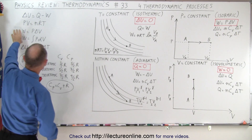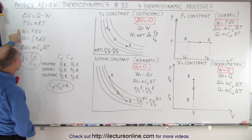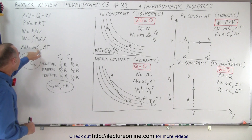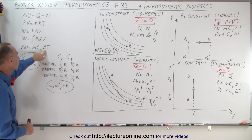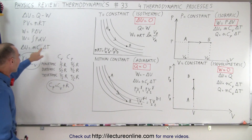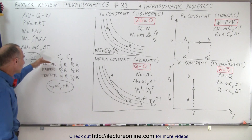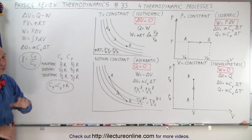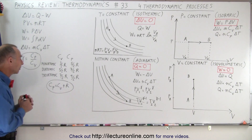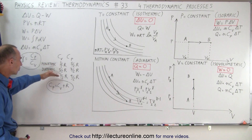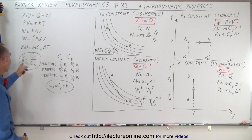We use PV equals nRT, we have the definition for work done, and we have the definition of the change in internal energy of a gas, which is the number of moles times C sub V times the change in temperature — meaning if there's no change in temperature there's no change in internal energy. We have values for C sub V and C sub P for three different kinds of gases: monatomic, diatomic, and triatomic. C sub P is always going to be one R bigger than C sub V for each of the three types, and there's a gamma variable which is the ratio of C sub P over C sub V.